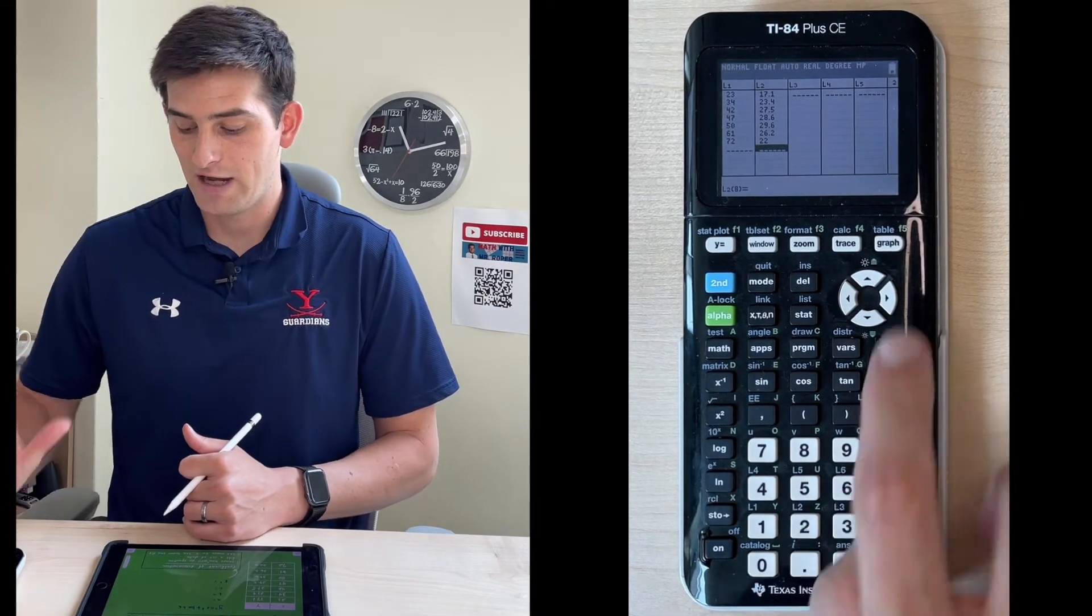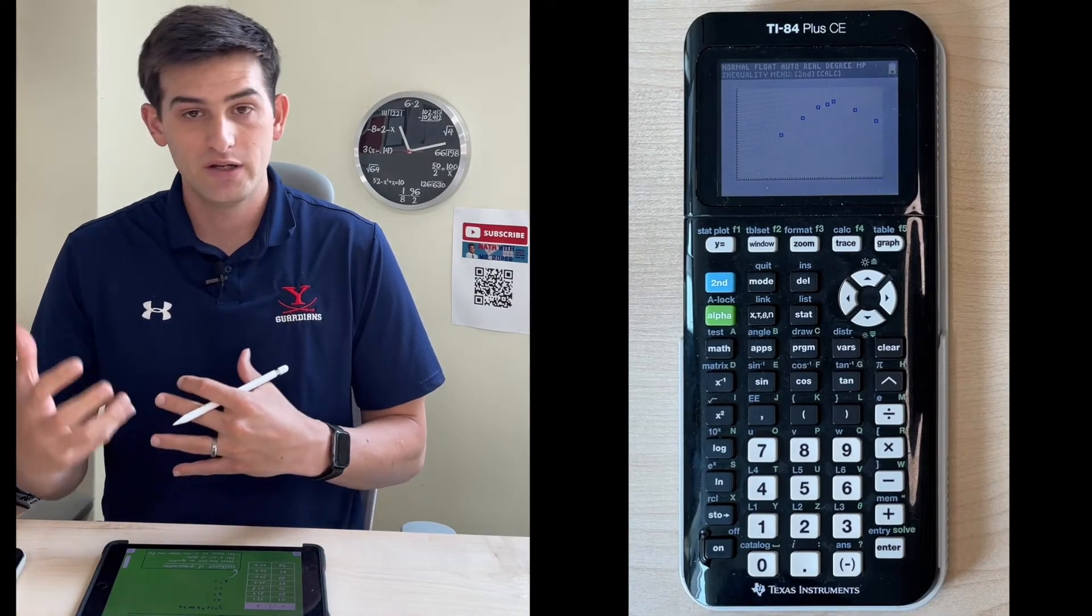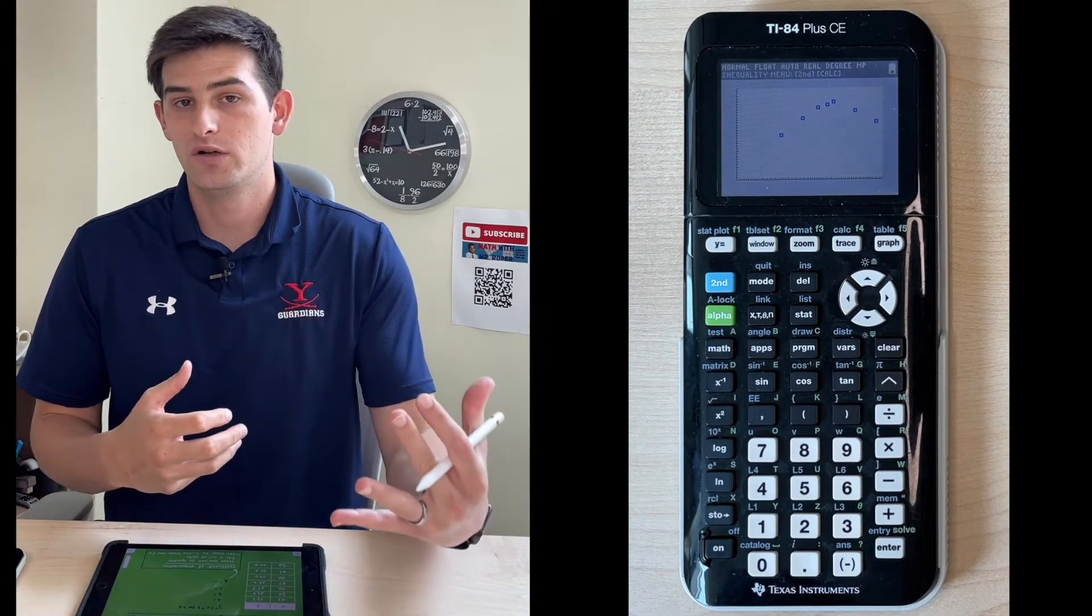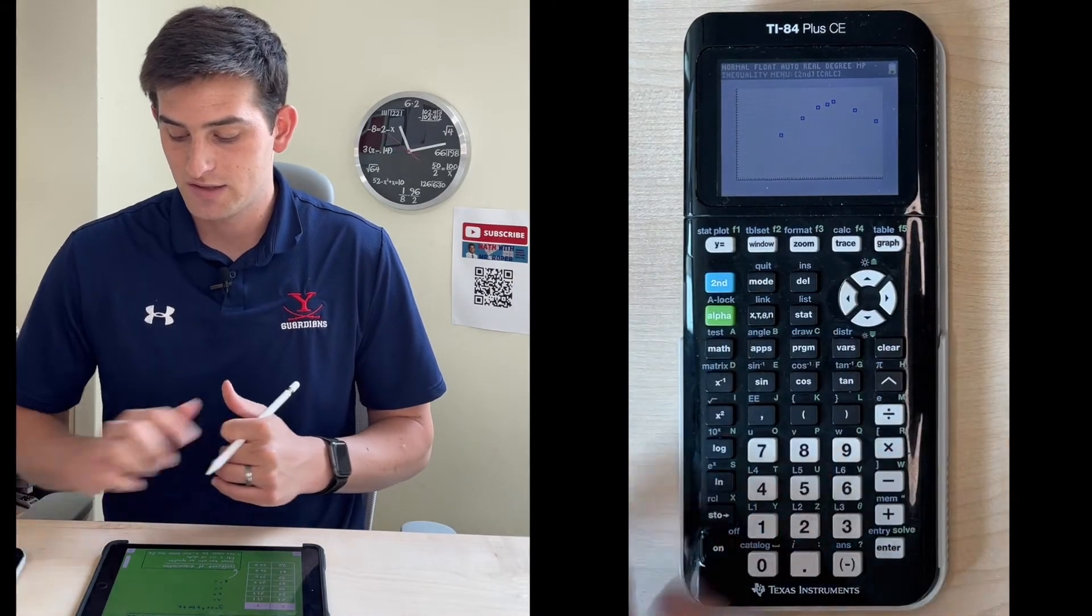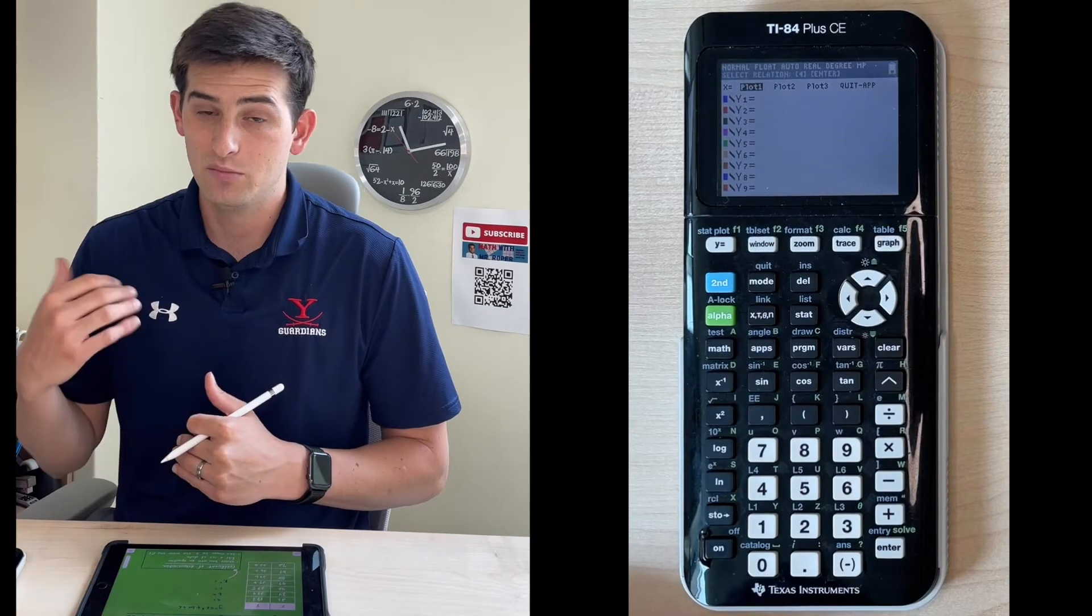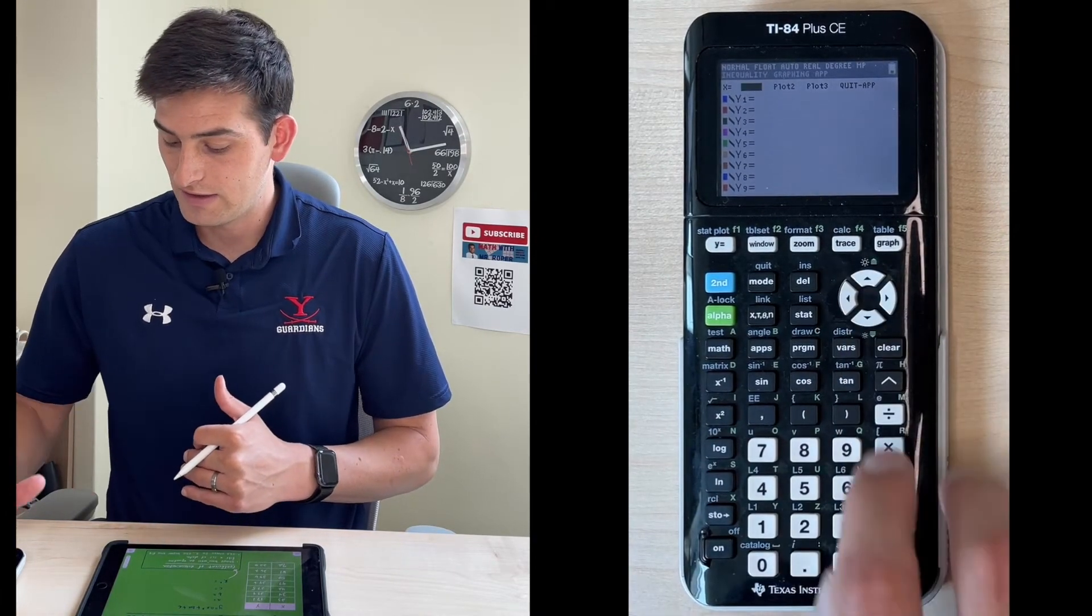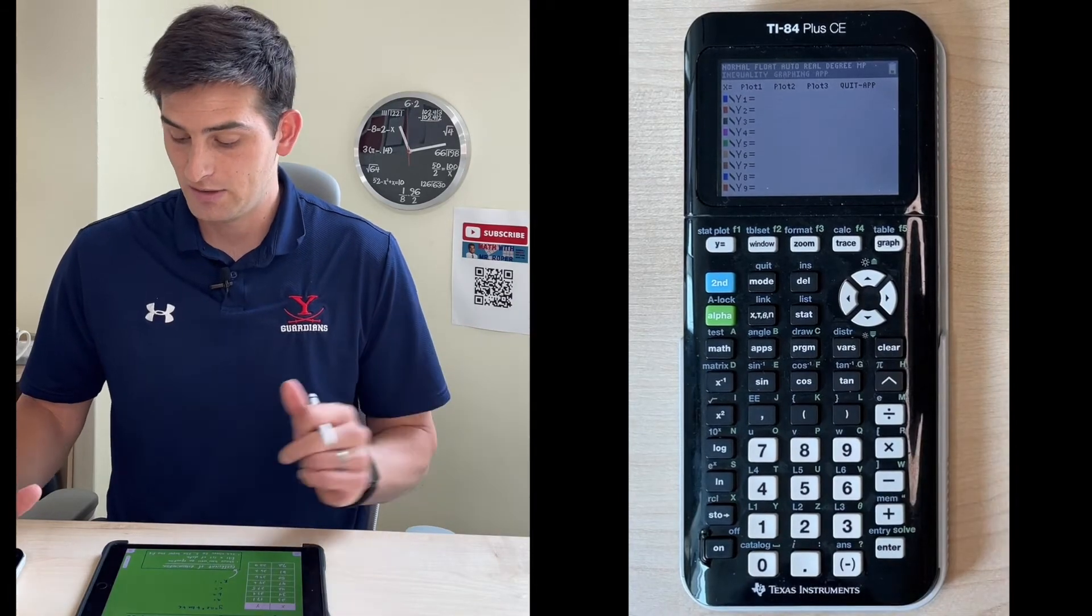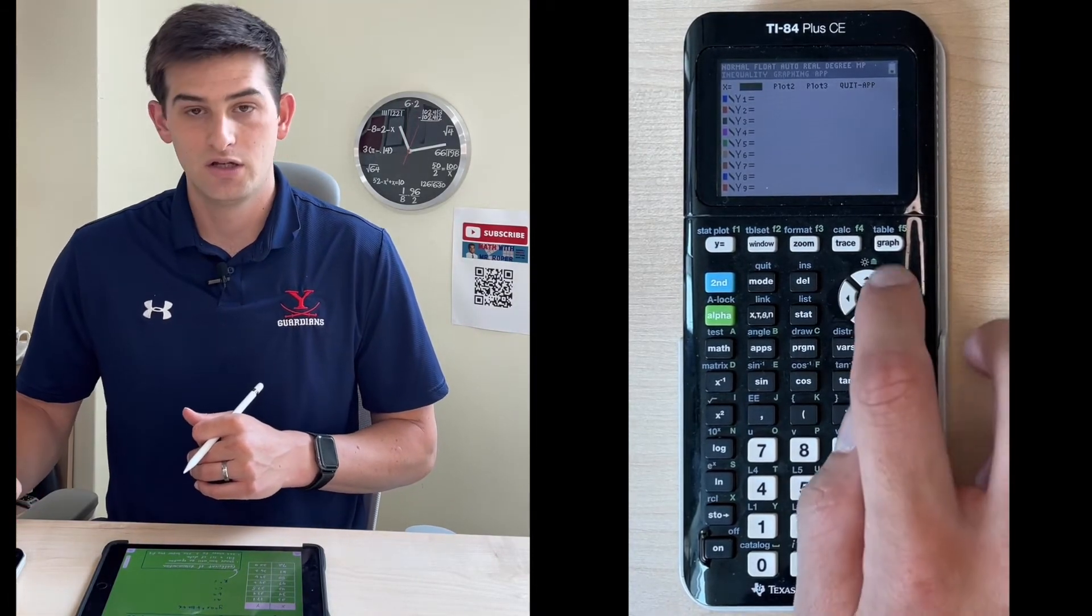Now I'm going to hit graph and notice how we have a scatter plot now. Yours might not show up if your window is messed up or if your plot is not on. Go to y equals and make sure at the top of the screen you got plot one in black right there highlighted. If it's not, you can go up to it and hit enter. See how mine is now not highlighted black, so I just turned it off. If you go back up there and hit enter, now you have turned it back on.